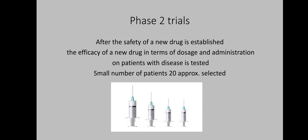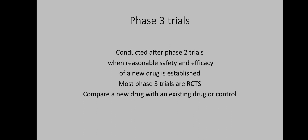In phase two trials, after the safety of a new drug is established, the efficacy of the drug in terms of dosage and administration is tested. Phase two trials are conducted on patients with the actual disease, but a small number — usually 20 or fewer — are selected. After successful completion of phase two, phase three trials are conducted, which are mostly randomized control trials and compare a new drug with an existing drug or a control.